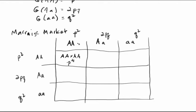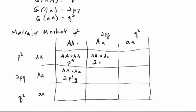The likelihood of you being big A big A and your spouse being big A little a — a big A big A cross with big A little a mating — would be equal to 2p cubed times q. Now remember, that's not the only way we're going to get big A big A crossed with big A little a. There's a 2pq likelihood that you are a heterozygote, and if that's the case you've got a p squared chance of mating with the big A big A homozygote, giving another big A big A cross with big A little a mating at a likelihood of 2p cubed times q.